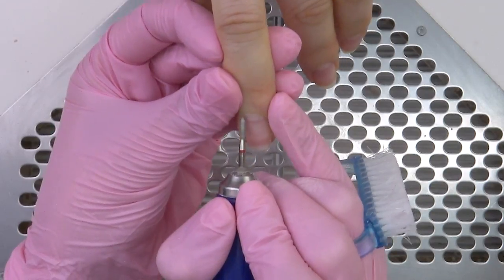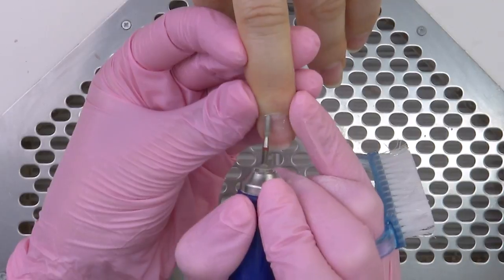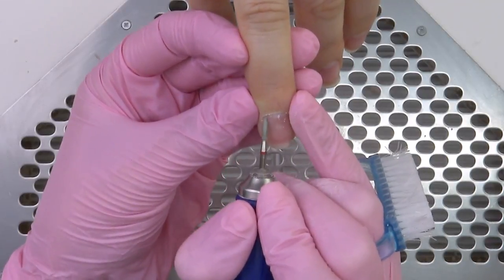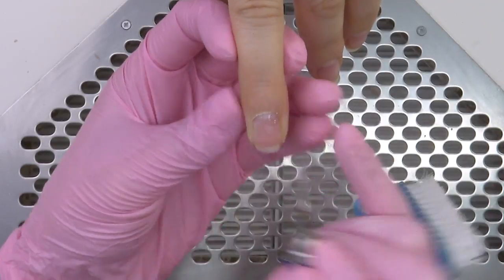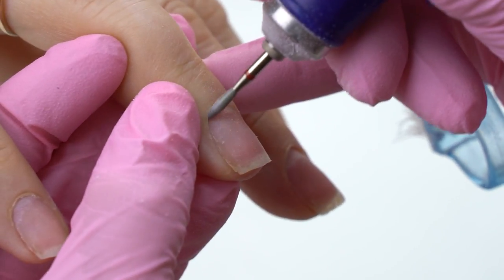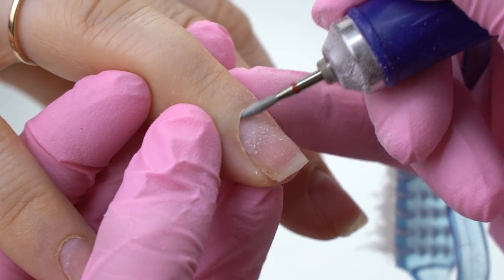Cleaning out the left sides. Removing all the pterygium. I'm using a red flame. Switch the rotation direction and process the right sides.